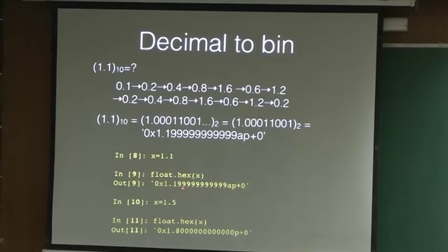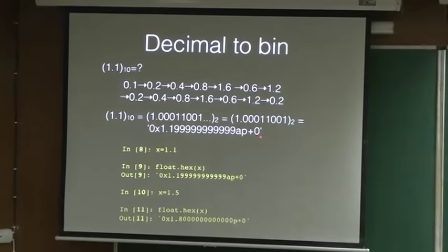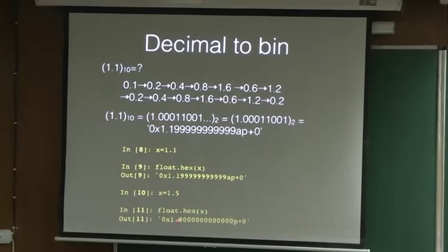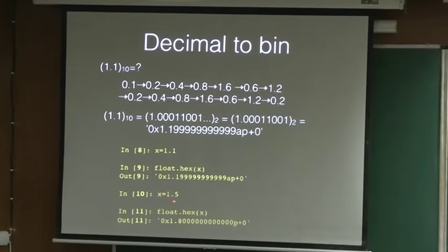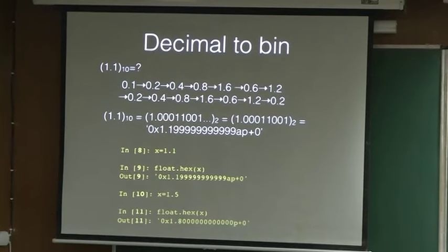This is how you get the float hex. 1.1 float hex will be exactly this number, and 1.5 can be represented accurately inside the computer. It is 1.100 in binary. You see it is 1.1 in binary - 0.1 will be 1 by 2 and 1 by 2 is 0.5.